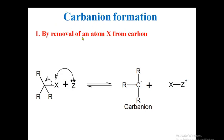Now, how are carbanions formed? Formation of carbanion — first method: by removal of an atom X from carbon. Here is a compound having a leaving group X, and when it reacts with a nucleophilic species, the nucleophile attacks this leaving group and detaches it from the carbon. The leaving group leaves behind its electron pair, so this carbon becomes negatively charged. This is carbanion formation.